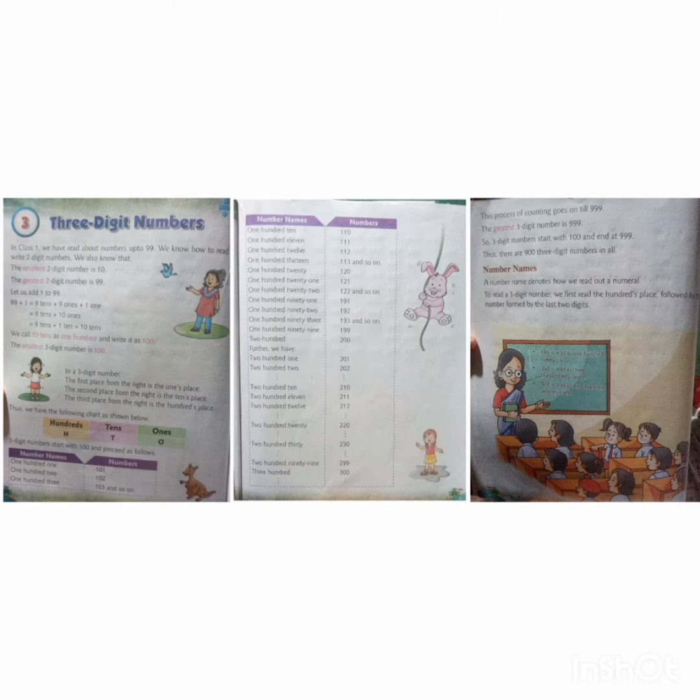In a three digit number, the first place from the right is the ones place. The second place from the right is the tens place, and the third place from the right is the hundreds place. Have you seen the chart in page number 20? There is a chart showing hundreds, tens and ones. Ones is denoted as O, tens is denoted as T, and hundreds is denoted as H — that is H-T-O.